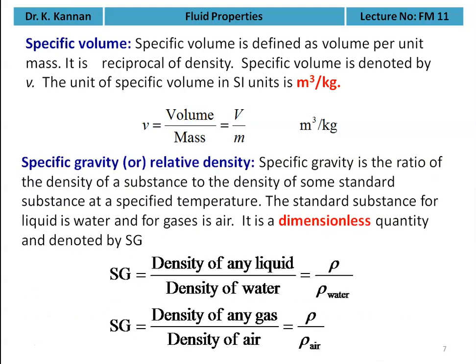Specific gravity or relative density is the ratio of the density of any substance to the density of a standard substance at a specific temperature. The standard substance for liquid is water and for gases it is air. It is a dimensionless quantity, denoted by Sg. For liquids: Sg = ρ / ρ_water. For gases: Sg = ρ_gas / ρ_air.